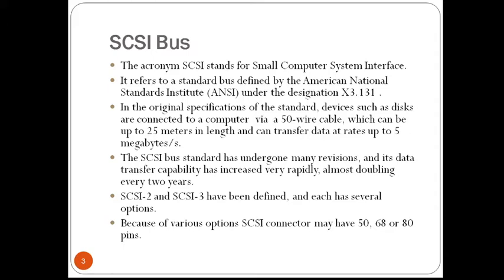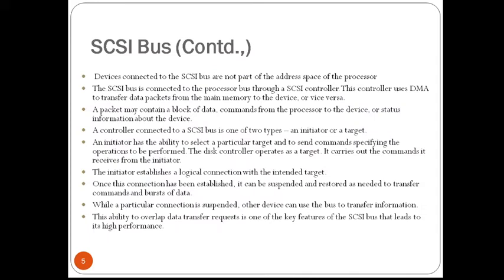Because of the various options available, the SCSI connector may have 50, 68, or 80 pins. The maximum transfer rate in commercial devices currently available varies from 5 Mbps to 160 Mbps. The most recent versions of the standard are intended to support transfer rates up to 320 Mbps, and 640 Mbps is anticipated a little later. The maximum transfer rate on a given bus is a function of cable length and number of devices connected — higher rates are achieved with shorter cables and fewer devices.